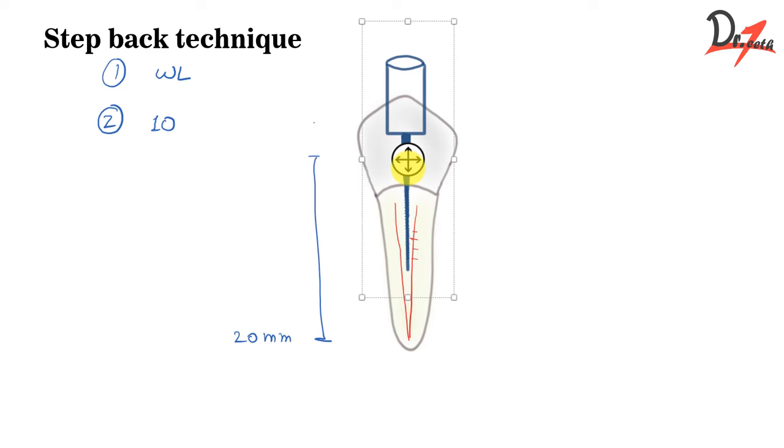So when you withdraw the file, this entire wall has been shaped or you have started giving shape to this wall. So the process is repeated through the entire canal and that is why it is called as the circumferential filing. We are filing throughout the circumference of the canal.